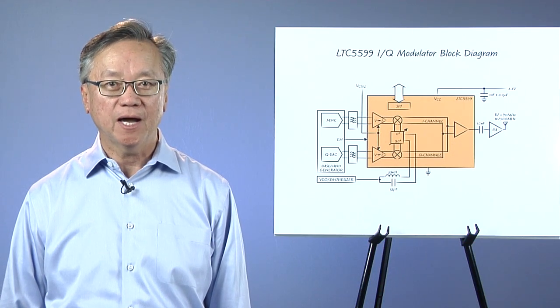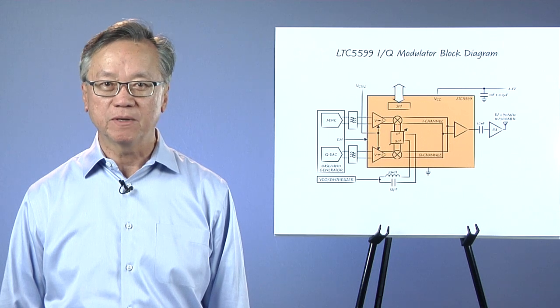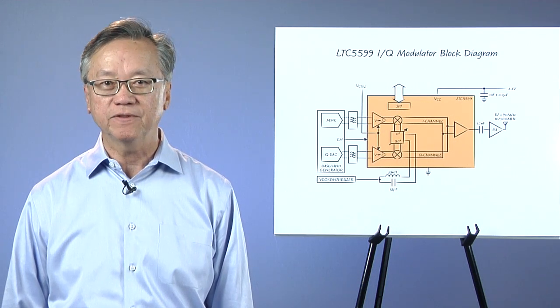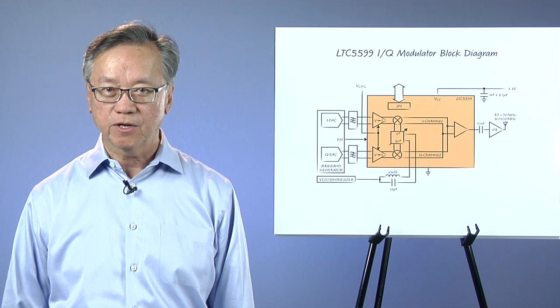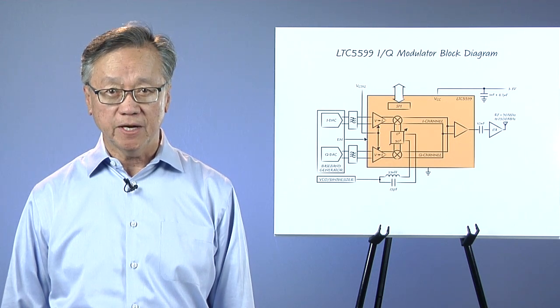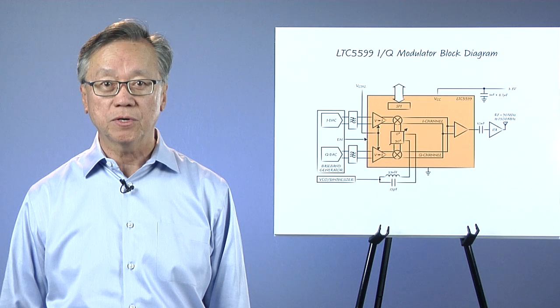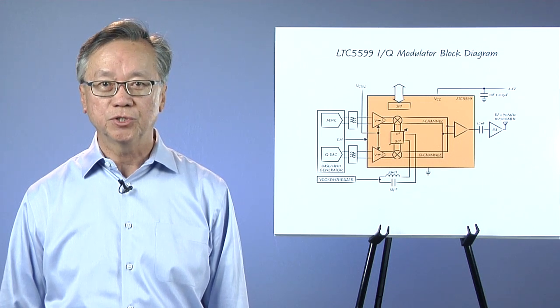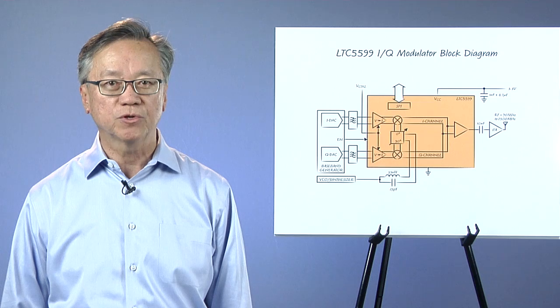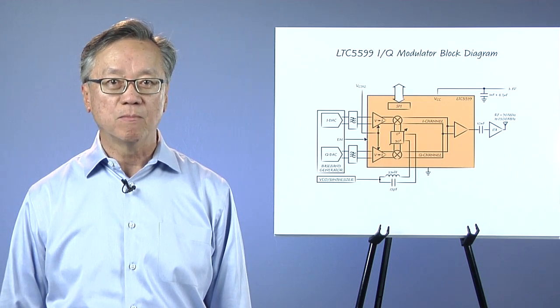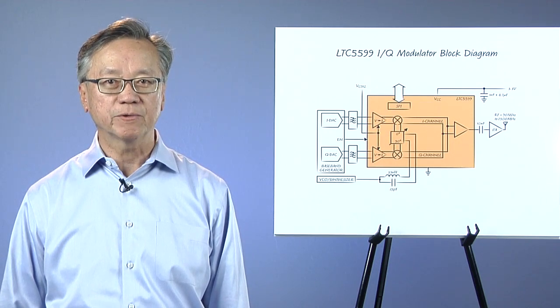I'm going to talk about how to extract the most performance from Linear Technology's LTC5599, a very low power, direct conversion IQ modulator. Such devices facilitate high order digital modulation to achieve a higher data throughput rate with minimum spectral bandwidth, thus allowing more efficient use of the frequency spectrum.